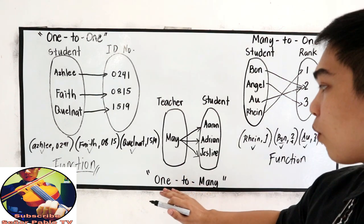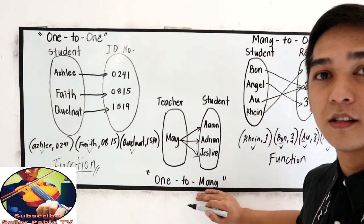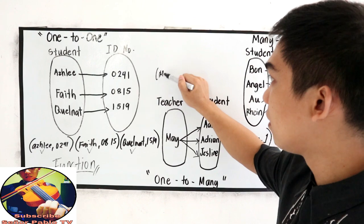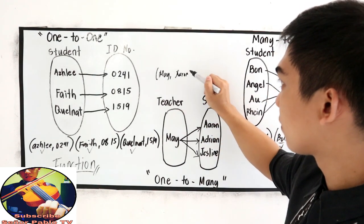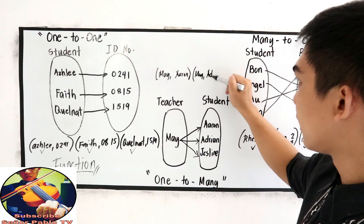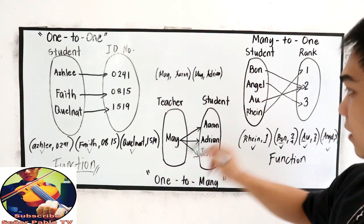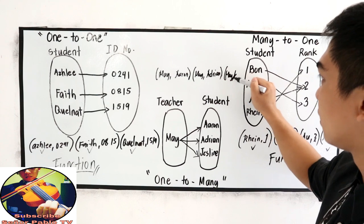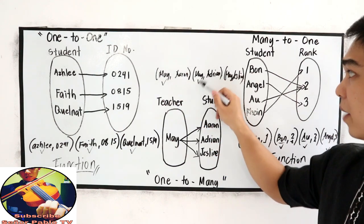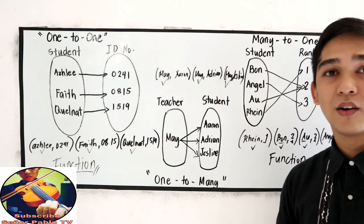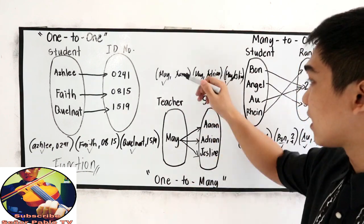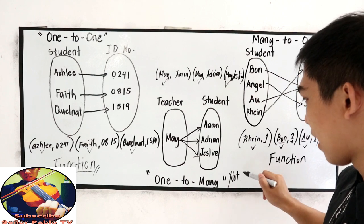How about our one-to-many correspondence? So, let's write as ordered pairs. May, Aaron. May, Adrian. May, Jess Lian. Look at our domain. Our domain is May, May, and May. That is repeated. That means one-to-many correspondence is not a function.